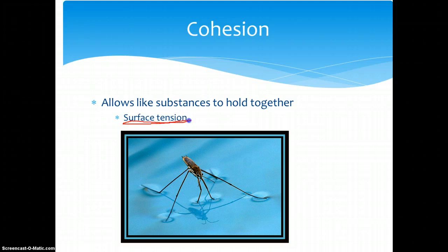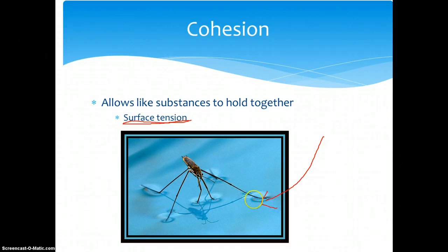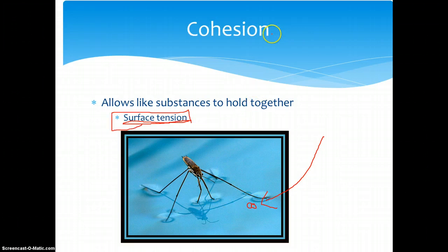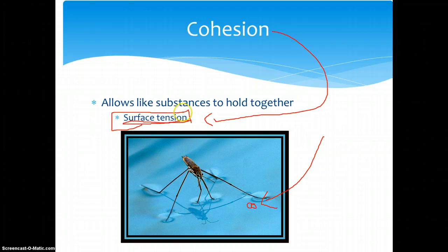Surface tension allows the water strider to walk on water. The pull between each water molecule allows the water strider to stay afloat without sinking in. Cohesion is the reason that causes surface tension, and surface tension is the reason why water doesn't move as individual molecules.